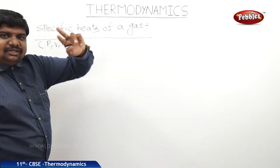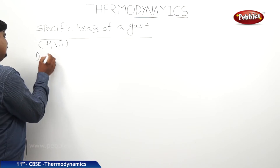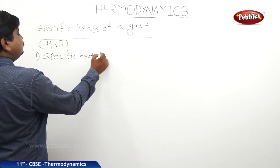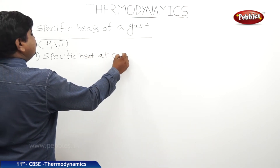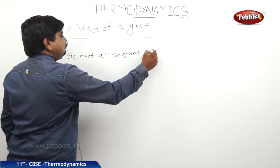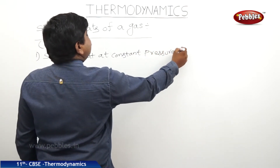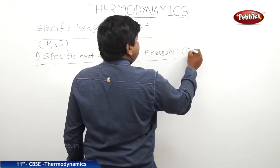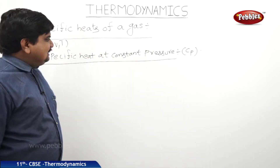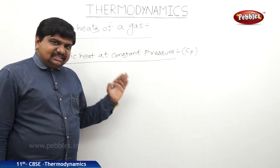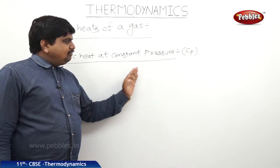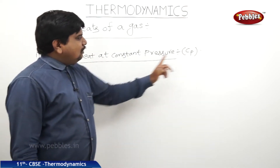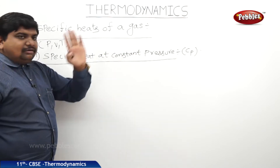The specific heats of gas are classified into two types. The first one is specific heat at constant pressure, and its symbol is C suffix P. The amount of heat energy required to raise 1 gram of gas by 1 degree Celsius temperature at constant pressure is called specific heat at constant pressure.